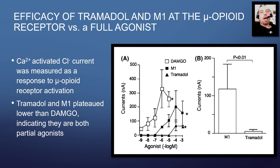Tramadol and M1 metabolite plateaued around the same point, but tramadol had a much lower maximum — meaning lower pharmacological efficacy. No matter how much you give, you reach a plateau below the highest activity substance, which is DAMGO. So M1 has lower efficacy than DAMGO, and tramadol has lower efficacy than M1. This supports the previous study: tramadol is a partial agonist, and M1 is a partial agonist. But that doesn't mean you can't achieve the same pharmacological effect as morphine, because morphine is also a partial agonist with similar efficacy to the M1 metabolite.